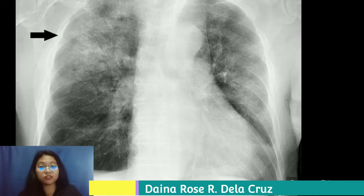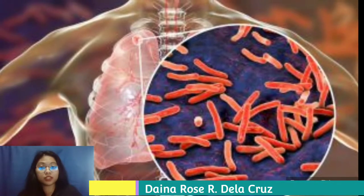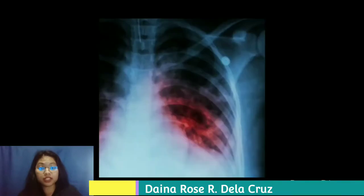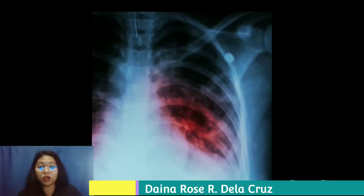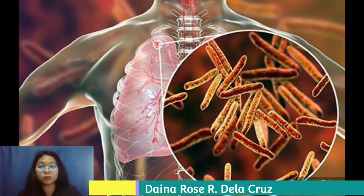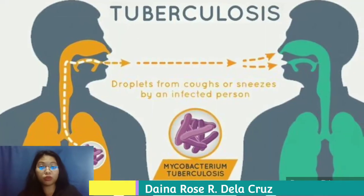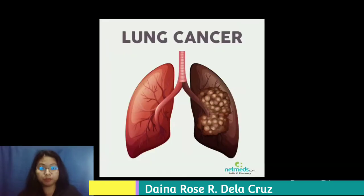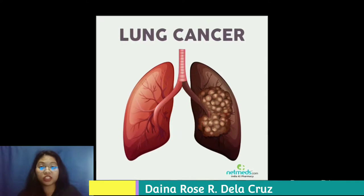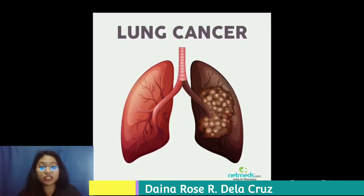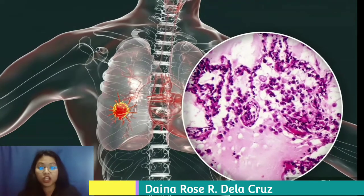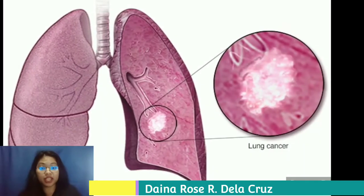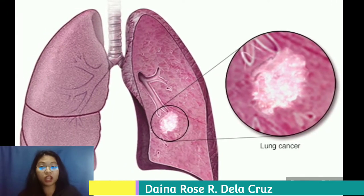Tuberculosis is a disease caused by bacteria called Mycobacterium tuberculosis. The bacteria usually attack the lungs but can also damage other parts of the body. TB spreads through the air when a person with TB of the lungs or throat coughs, sneezes, or talks. It usually affects the lungs but may also involve the kidneys, spine, or brain. Lung cancer begins in the lungs when cells change and grow into a tumor. It is often caused by smoking or other inhaled chemicals, and smoking is cited as the number one cause of cancer.